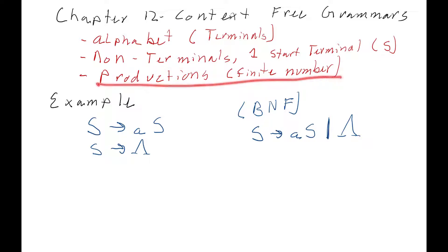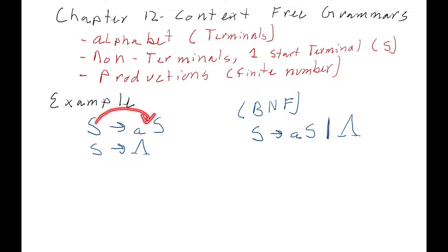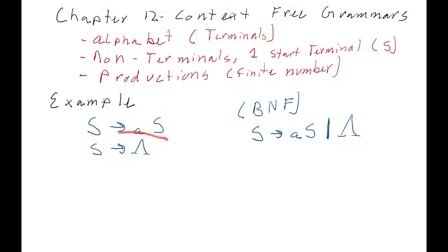Then we have a list of productions. This is an example of one production and one example of a context-free grammar. We start with the start symbol, and the start symbol can get replaced with what the arrow points to. So we can replace the start symbol with a terminal — that's a lowercase letter — and this capital letter is a non-terminal. We can keep going, replacing this S with another AS. We can also replace S with the null word, making it disappear.